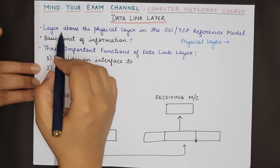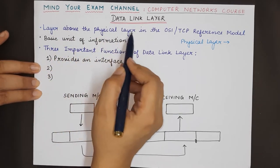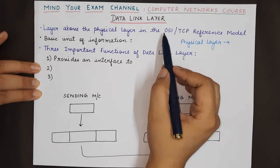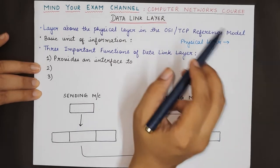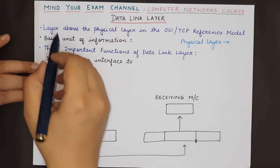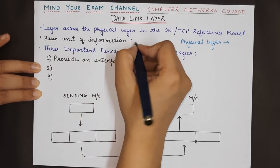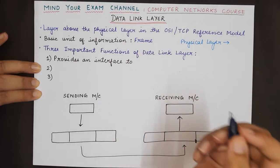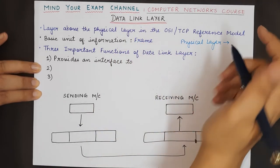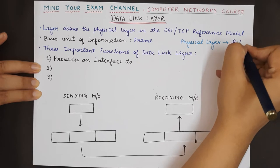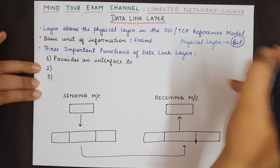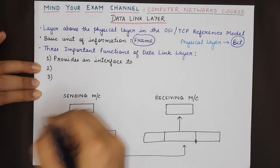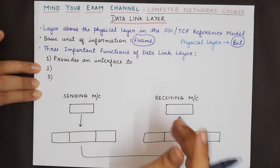The data link layer is the layer that lies above the physical layer in the TCP/IP model or the OSI reference model. In the data link layer, the basic unit of information is a frame, whereas in the physical layer the basic unit of information transmitted was a bit. This is one of the major differences to remember, and when we go above the data link layer, the unit of information will become a packet.